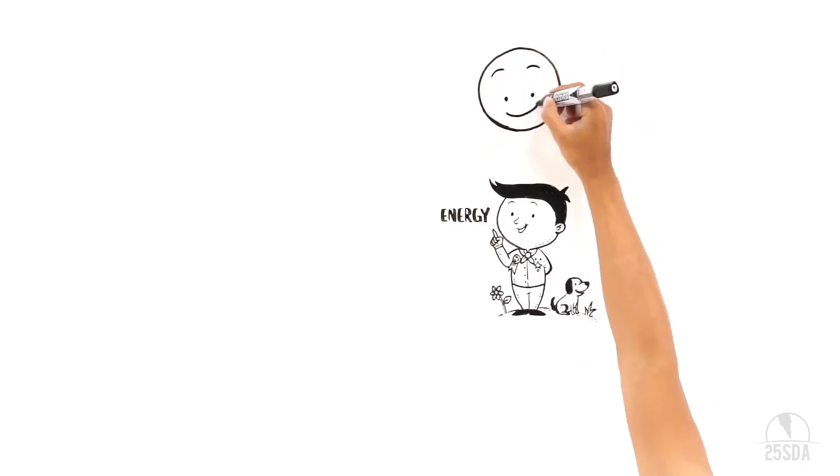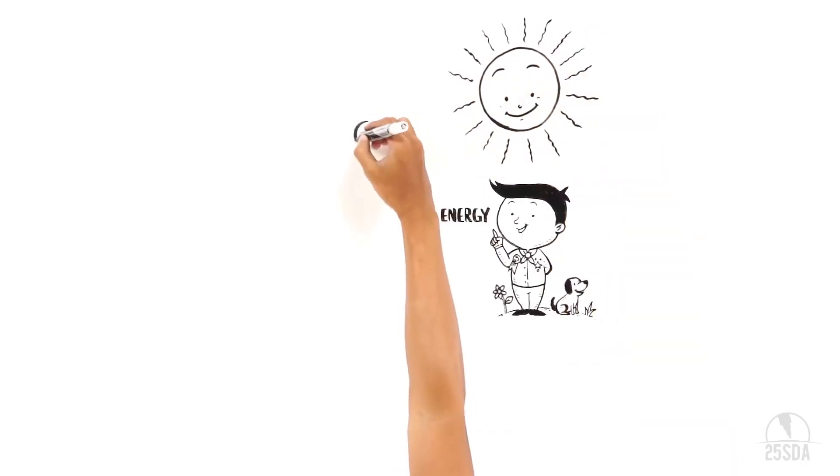The sun gives us two kinds of energy, light energy and heat energy. At night, electrical energy powers our light bulbs and appliances.